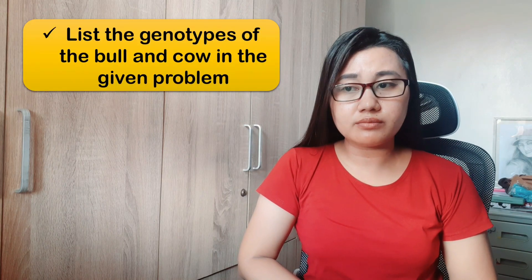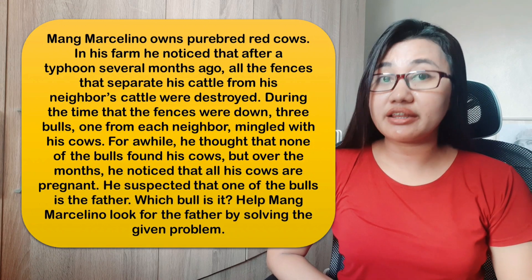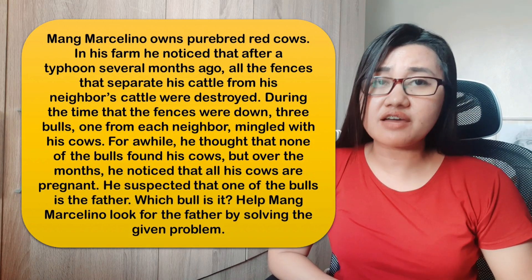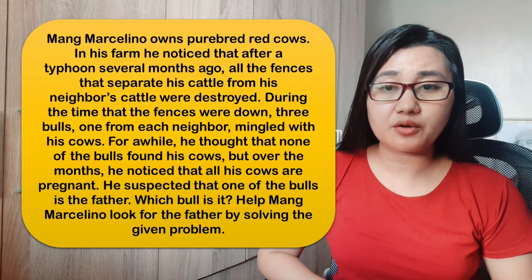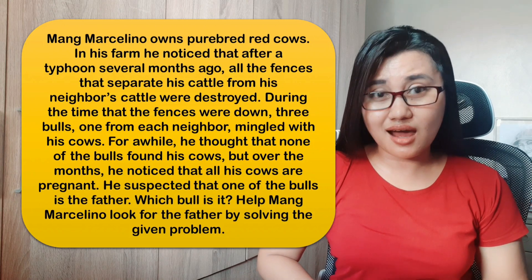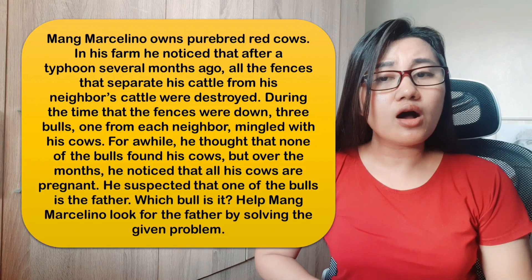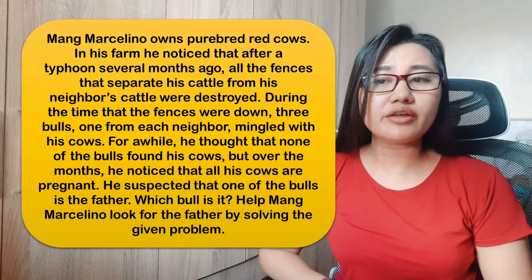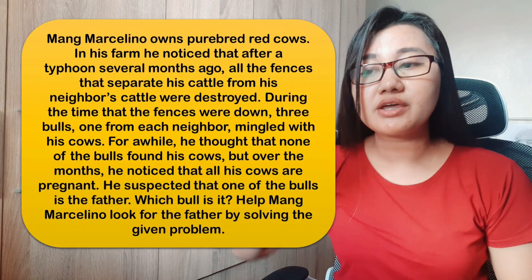Now I will give you an activity about the mystery bull. The objectives are: list the genotypes of the bull and the cow in the given problem, diagram and complete a Punnett square, and give the phenotypic percentages of the offspring. Mang Marcelino owns pure-breed red cows. After a typhoon, the fences separating his cattle from his neighbors' were destroyed. Three bulls — one from each neighbor — mingled with his cows, and all of his cows became pregnant. He suspected one of the bulls is the father. Help Mang Marcelino find the father.